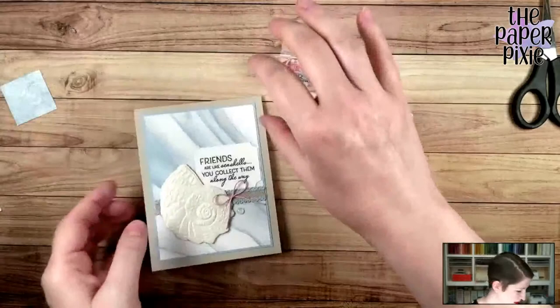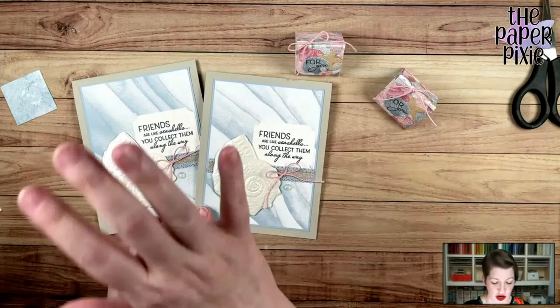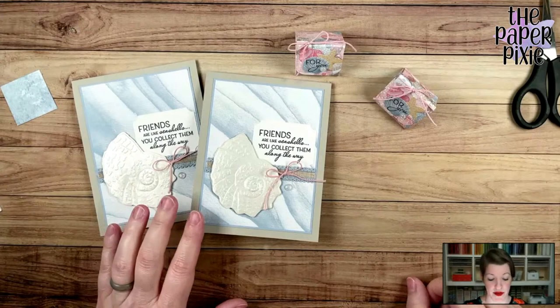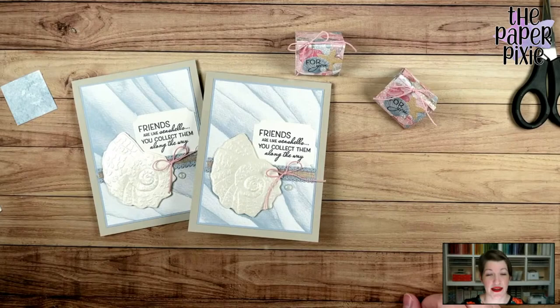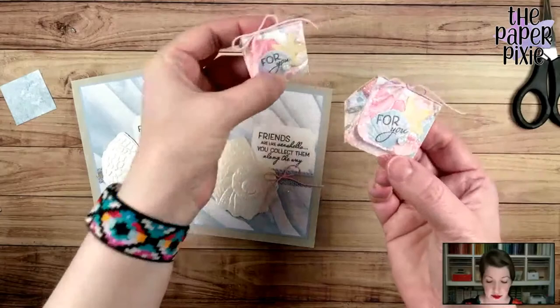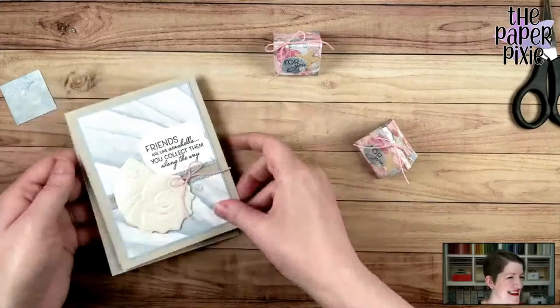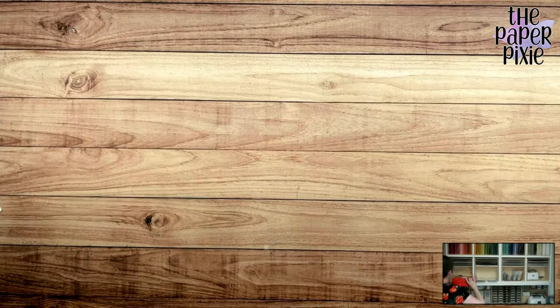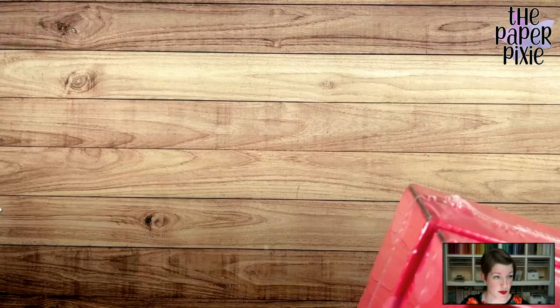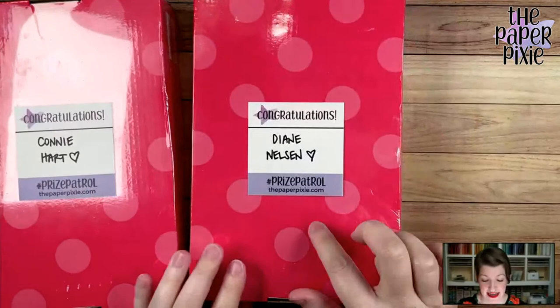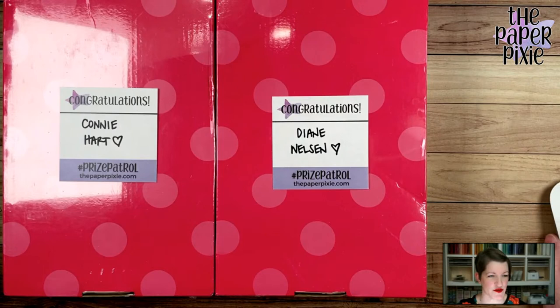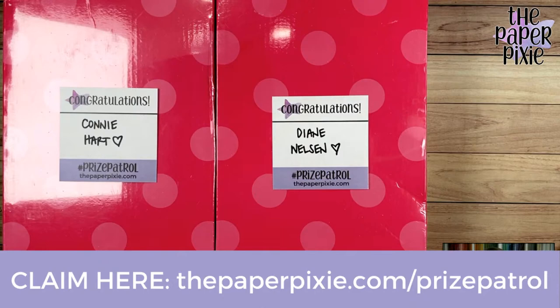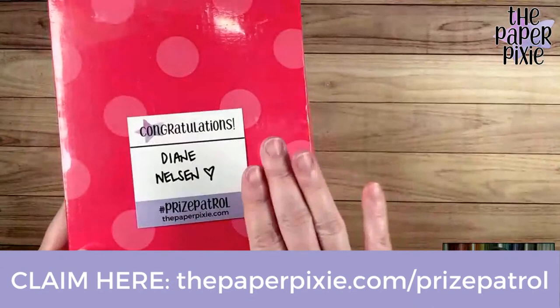Here is our cute little treat holders. This one has a Dove Promise, Hershey's Nugget, and then we've got our card. This is from the Sand and Sea Product Suite. The card will post on my blog in tomorrow's blog post. If you're not already following my blog, thepaperpixie.com, you can subscribe at thepaperpixie.com/subscribe. Then the 3D project and a shortened YouTube tutorial will post on Friday's blog post. Now we're going to do prize patrol. Our winners from last week have won the January 2021 paper pumpkin. Congratulations to Connie Hart and Diane Nelson.